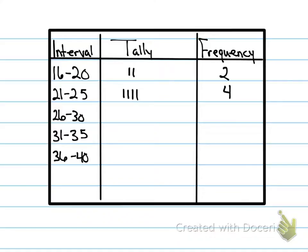What about 26 to 30? How many? Four. What about 31 through 35? Five. What about 36 through 40? Two. Okay, so now we're going to make a histogram. So change your frequencies if you got any of them wrong.